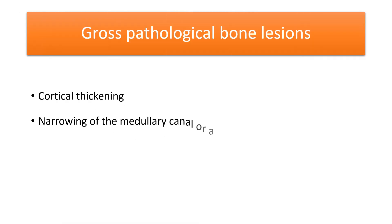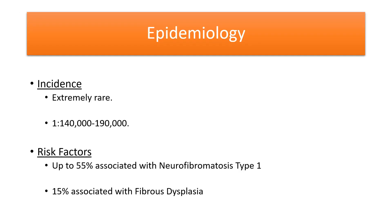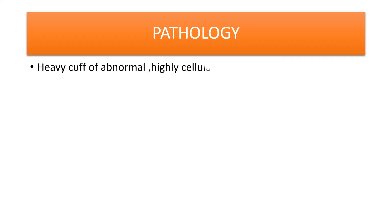Apart from bowing and pseudarthrosis of the tibial diaphysis, other features may include cortical thickening, narrowing of the medullary canal, or cyst formation. The disease is extremely rare with no sex predilection. 55% of cases are associated with neurofibromatosis type 1, whereas 10 to 50% have association with fibrous dysplasia. The pathology is confined to a segment of the tibia and not the whole length.